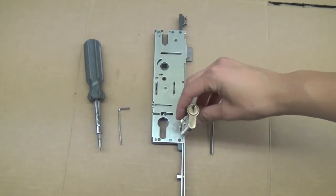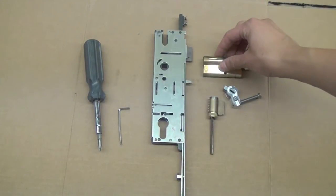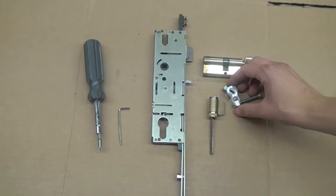A Euro profile multipoint or mortise lock has an opening like this for the cylinder. The Euro profile cylinder fits perfectly in the hole.